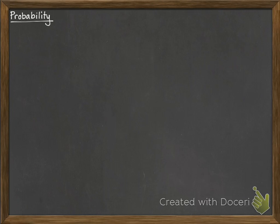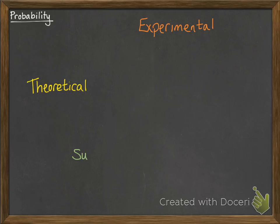So we've got a quick introduction to probability. There are three general types of probability. The first one is theoretical. We also have experimental. And then a third one you might not have thought about before, which is subjective or observational.